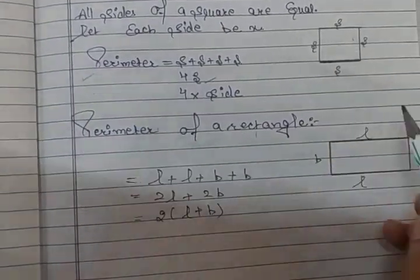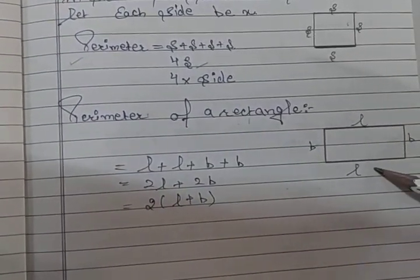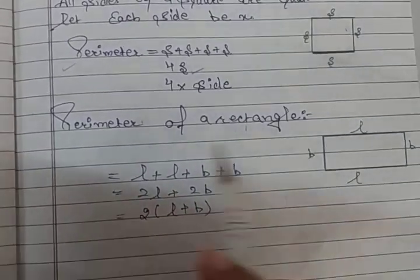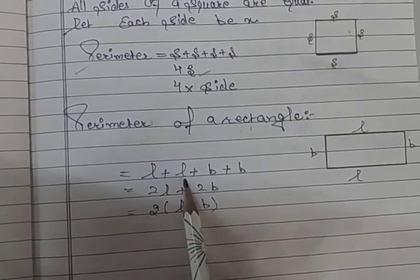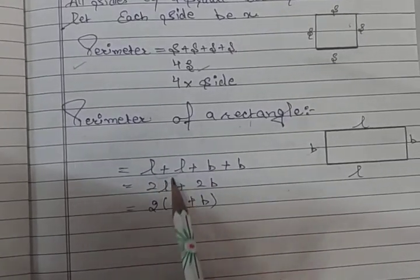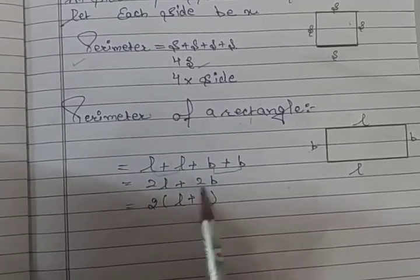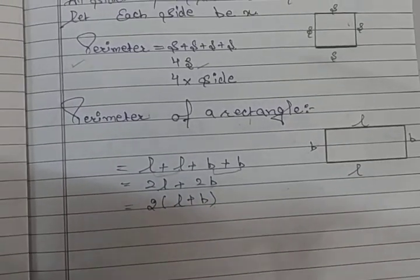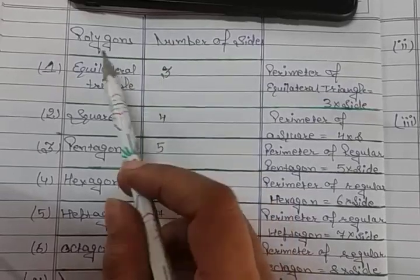Perimeter of rectangle — rectangle ka dekho, perimeter. Haamesha aapko pata hai iske jo length hai, donon sides equal hoti hai, and breadth b, both equal hoti hai. Aapke paas perimeter iska kya aajayega: 2 lengths aajayegi — length plus length, and plus breadth plus breadth. Then aapke paas perimeter of rectangle aajayega.